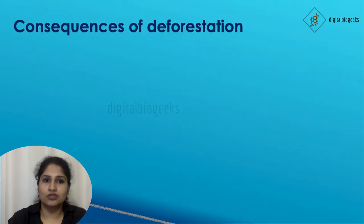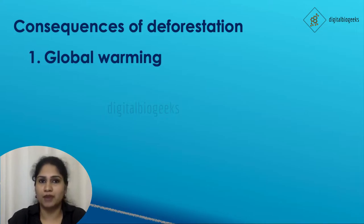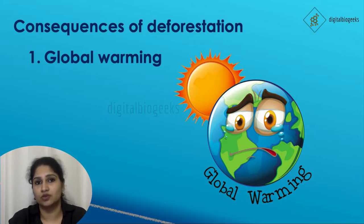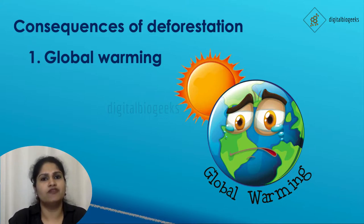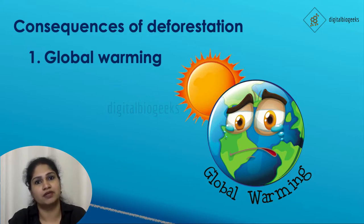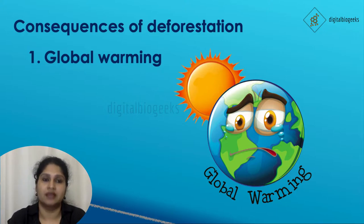Let's see what are the consequences of deforestation. One of the main consequences is global warming. Trees absorb carbon dioxide from the atmosphere to prepare their food through photosynthesis. But when deforestation happens there are only a few trees left, so the absorption of carbon dioxide decreases and the amount of carbon dioxide in the atmosphere increases. This carbon dioxide traps the heat rays reflected back from the earth, which increases the temperature of the earth. This is global warming.